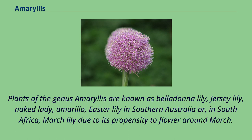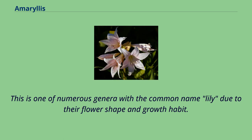Plants of the genus Amaryllis are known as belladonna lily, jersey lily, naked lady, amarillo, easter lily in southern Australia, or in South Africa, March lily, due to its propensity to flower around March. This is one of numerous genera with the common name lily due to their flower shape and growth habit.